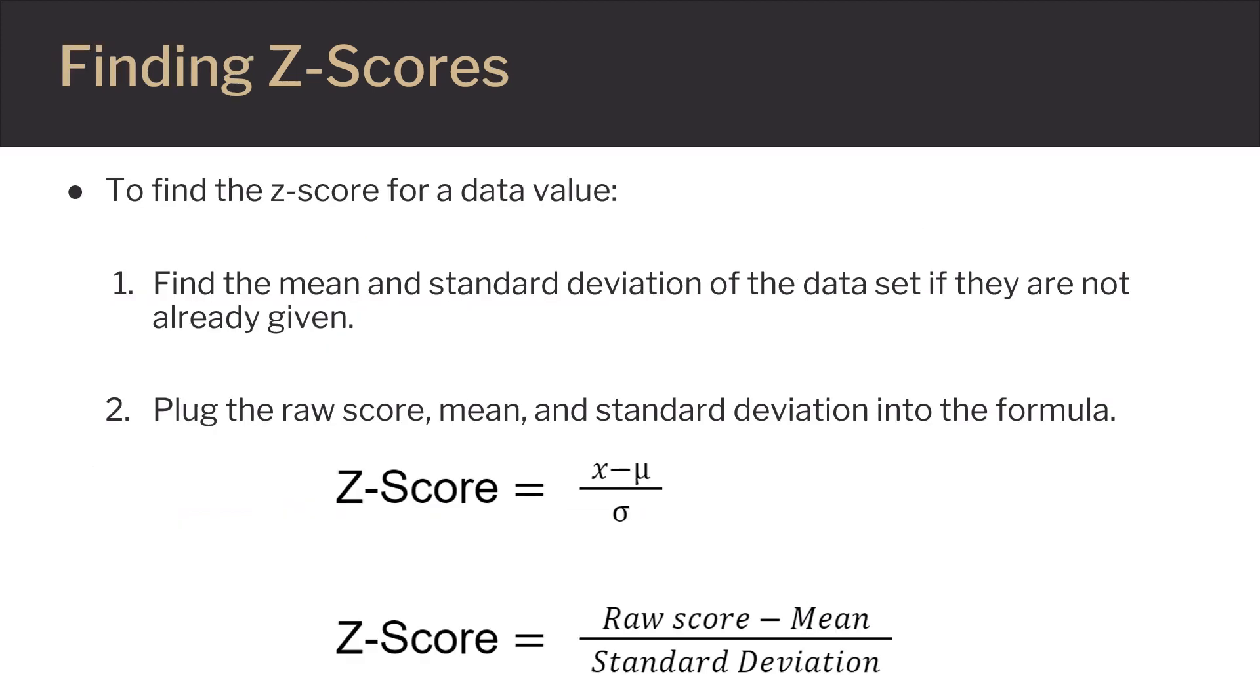To find the Z-Score for a data value, first you have to find the mean and standard deviation of the data set if they are not already given. Then you have to plug the raw score, mean, and standard deviation into the formula.